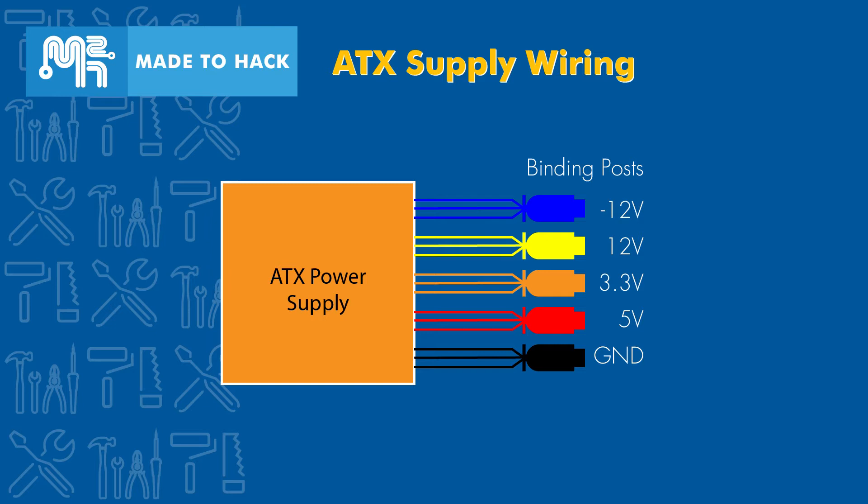These are the wiring colors corresponding to the different ATX voltages. The blue wires are for negative 12 volts, the yellow wires are for positive 12 volts. The orange wires are for positive 3.3 volts. I didn't have an orange binding post, so I used green. The red wires are connected to positive 5 volts and finally the black wires are ground.